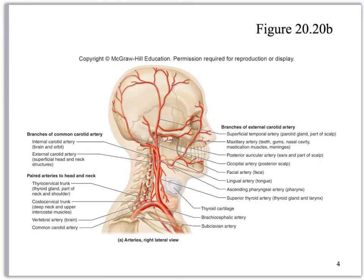Right here you see that brachiocephalic artery coming off and that is going to split into the common carotid and the subclavian. I want you to remember the siding — right brachiocephalic, right common carotid — because the right and left are asymmetrical. You need to be able to distinguish them. Most blood vessels I don't care if you put right or left, but on these I do. So: right subclavian, right brachiocephalic, right common carotid.